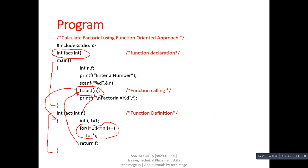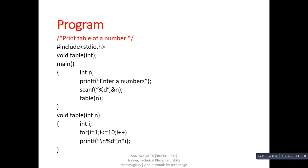Here is another program implemented using a function oriented approach — this program prints the table of a number. Notice that we are using return type void. In the previous program we used int as a return type, but here we use void. If we use int, float, or char as a return type it means we can return that type of value from a function. If we do not want to return any value, or if the function wants to return more than one value which cannot be returned, in both cases we can use void as a return type.